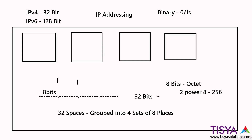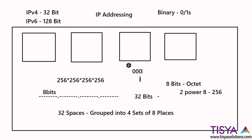If we have four octets, the total number of IPv4 addresses is 256 × 256 × 256 × 256. The smallest value in an octet is eight zeros, and the largest is eight ones. In between, you have all combinations of zeros and ones filling the remaining spaces. Multiplying out across all four octets gives us the total IPv4 address space.